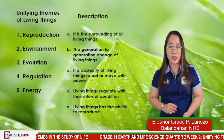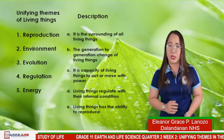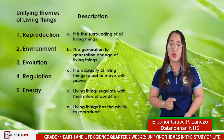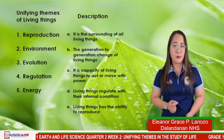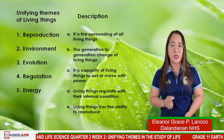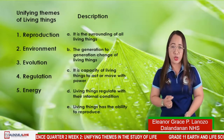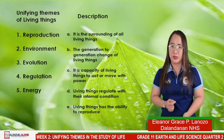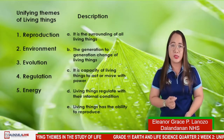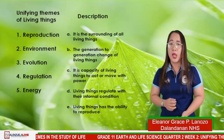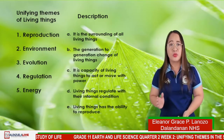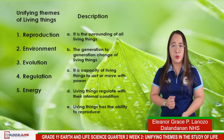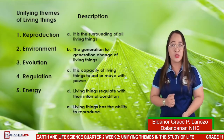The first description is letter A: surrounding of all living things. Letter B: the generation to generation change of living things. Letter C: the capacity of living things to act or move with power. Letter D: living things regulate their internal condition. And lastly, letter E: living things have the ability to reproduce. Match the unifying themes of life to their descriptions — you can comment your answer below.